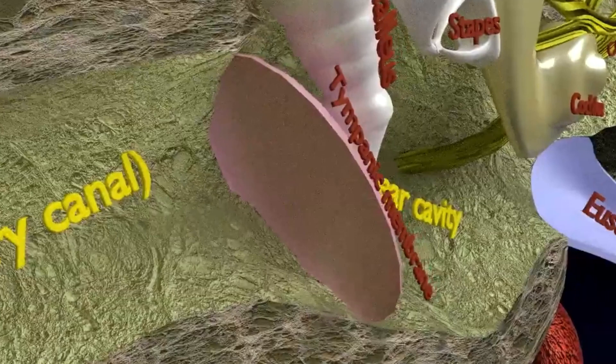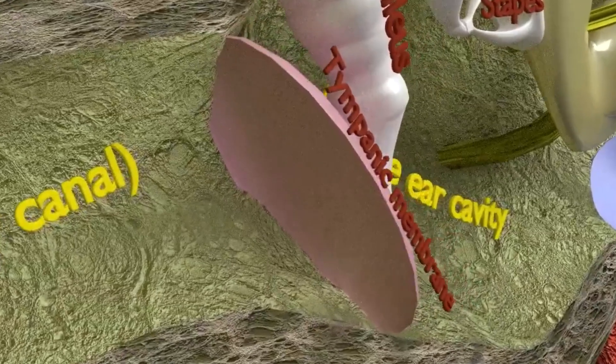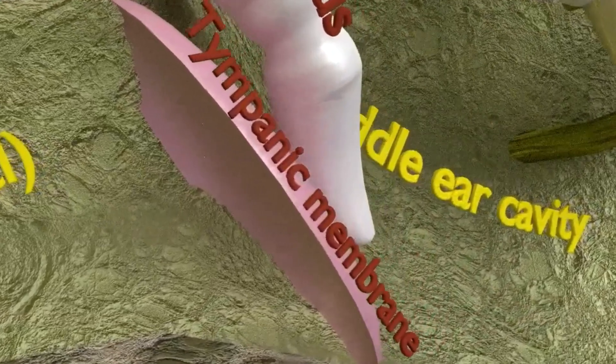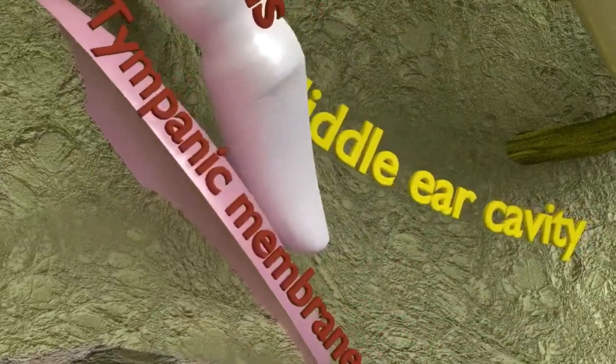The eardrum, or the tympanic membrane, is circular and flexible and begins to vibrate as the incoming sound waves strike it.